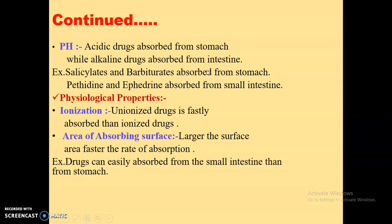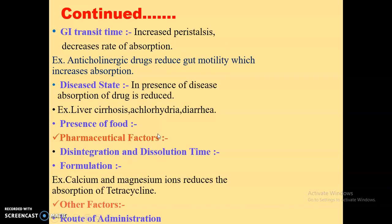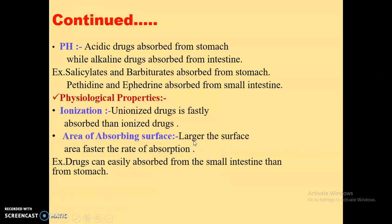As compared to the gastrointestinal mucosa and pulmonary endothelium, the skin is a poor surface for absorption. Area of absorbing surface: it is directly proportional to the rate of absorption — larger the surface area, faster the rate of absorption. Drugs can be more easily absorbed from the small intestine than from the stomach because the small intestine has a greater surface area compared to the stomach.